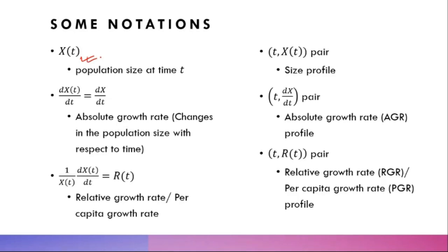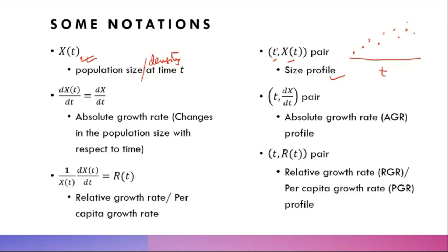The population size at time t, also called population size or density, has a unit. When you plot t and x(t) together, in growth literature we call it the size profile. This could represent observations like the number of insects or tigers surveyed over time. When we have size versus time, this is called a typical size profile.